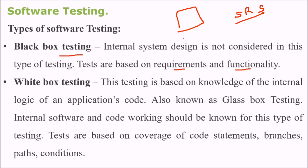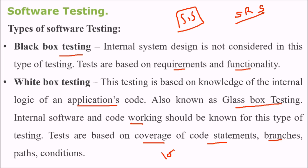Then we have white box testing. White box testing means we want to check the internals of the system. This testing is based on the knowledge of the internal logic of the application code — all the ifs, whiles, dos, and fors are being tested. This is also known as glass box testing. Internal software and code working should be known, and tests are based on coverage of code statements, branches, paths, and conditions. We want to achieve 100% code coverage, which is not always possible.